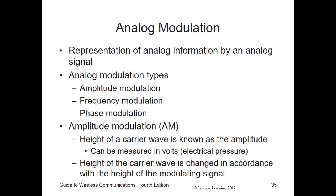Recall that the carrier signal in analog radio transmission is a continuous electrical signal that carries no information and is more correctly referred to as a continuous wave (CW). Only after information is added through modulation should it be called a carrier. Analog modulation is the representation of analog information by an analog signal. There are three basic types of modulation that can be applied to an analog signal: the height of the signal (amplitude), the frequency of the signal, and the relative starting point or phase of the signal.